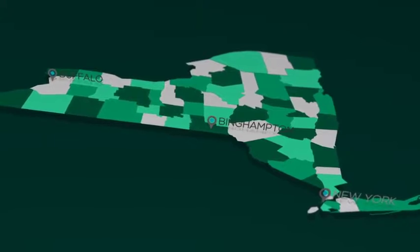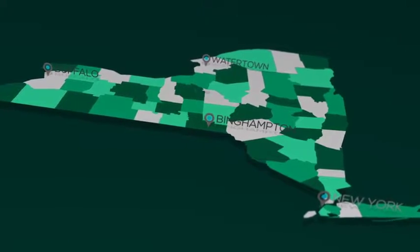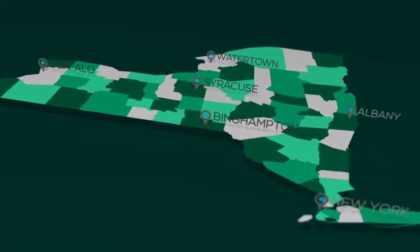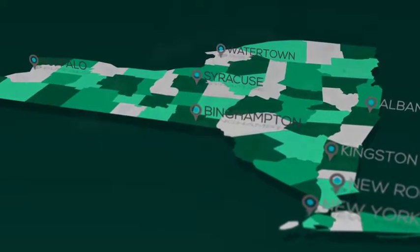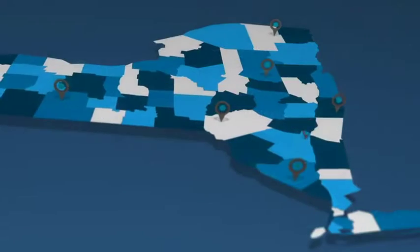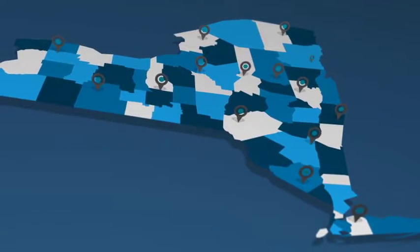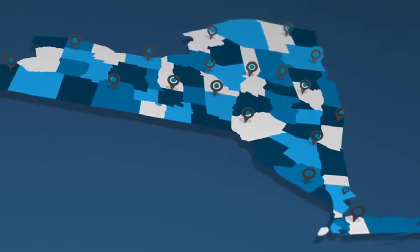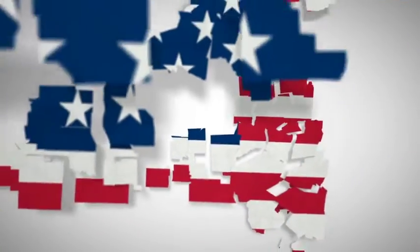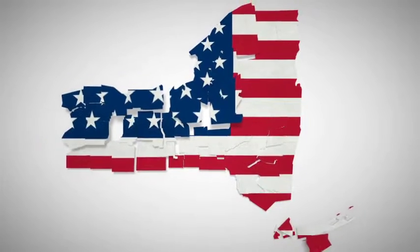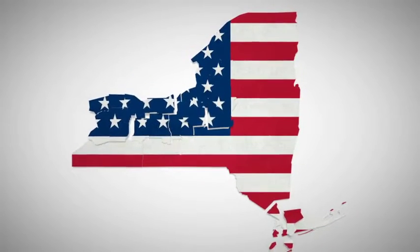Includes map markers for pinpointing cities, locations, and other areas of interest. Add as many as you need. All of the scenes in this preview video are just usage examples to give you an idea of what's possible with the New York Map Kit from Spacestock Footage.